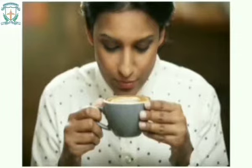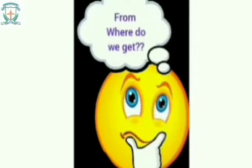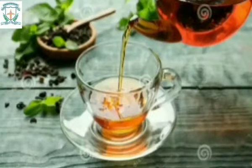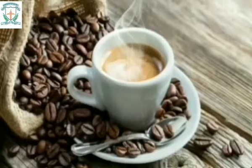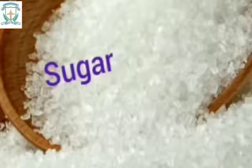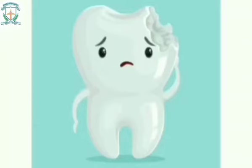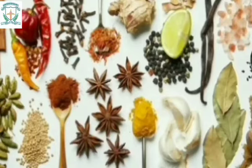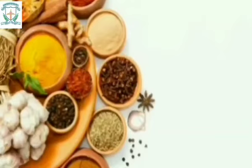Coffee, Tea, Sugar, Spices, and Oil: Children, you all must have seen your parents and grandparents having a cup of tea or coffee in the morning and evening. Tea is made from tea leaves. Coffee is made from coffee beans. Sugar is made from sugarcane. Eating too much sugar harms our teeth.